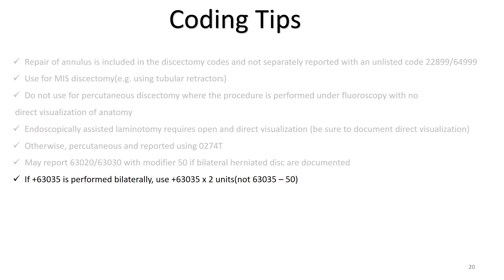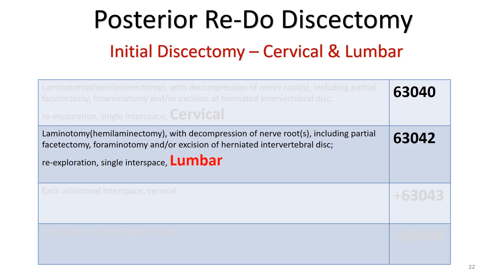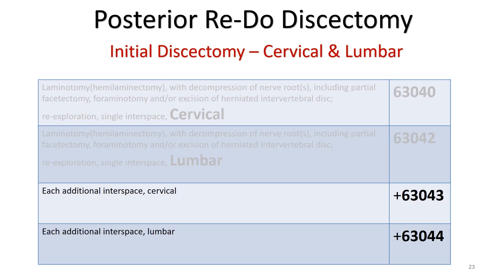Now let's proceed to redo discectomy. If you perform a laminotomy with decompression of the nerve roots, including partial facetectomy, foraminotomy, and/or excision of herniated intervertebral discs, and this is a re-exploration of a single interspace in the cervical spine, use code 63040. The same procedure in the lumbar spine as a re-exploration uses code 63042. For each additional interspace — cervical spine, use 63043; lumbar spine, use 63044.